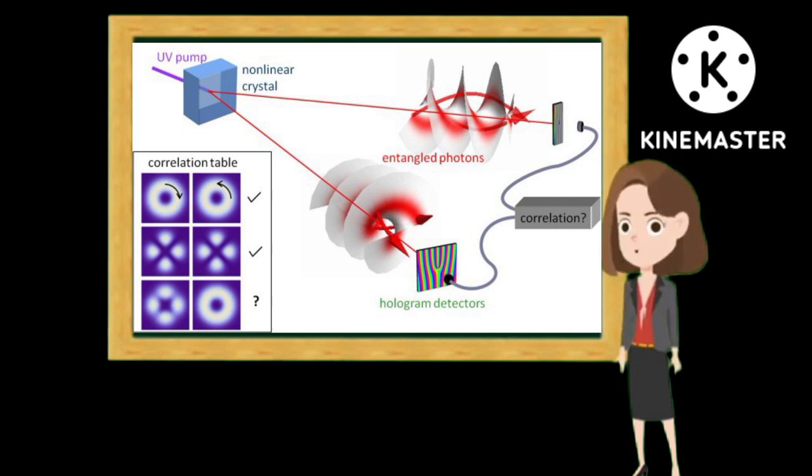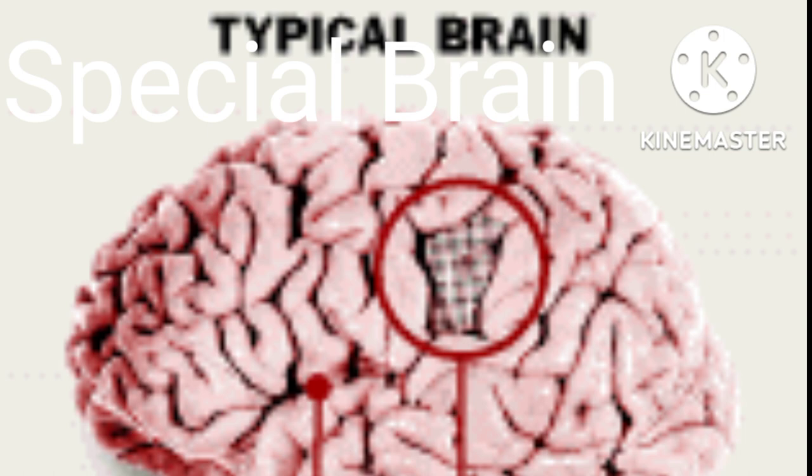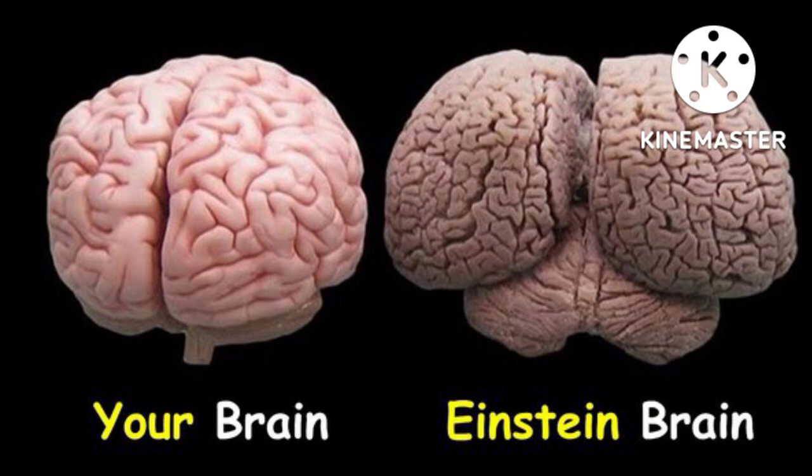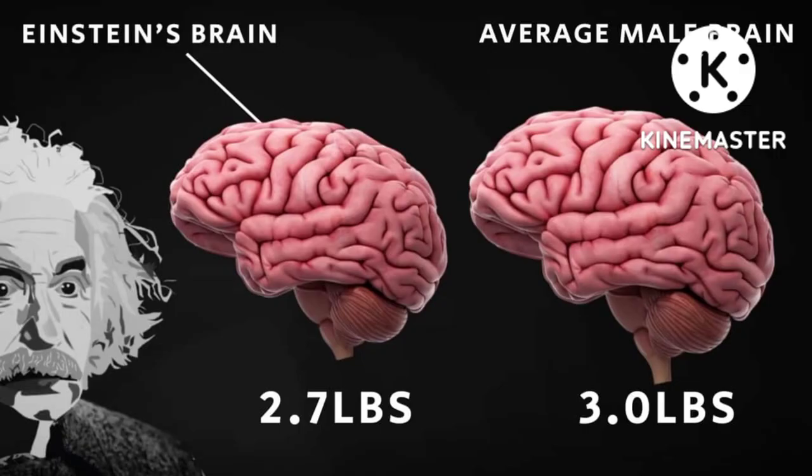Einstein's genius, Galliberta says, was probably due to some combination of a special brain and the environment he lived in. He suggests that researchers now attempt to compare Einstein's brain with that of other talented physicists to see if the brain's features were unique to Einstein himself.